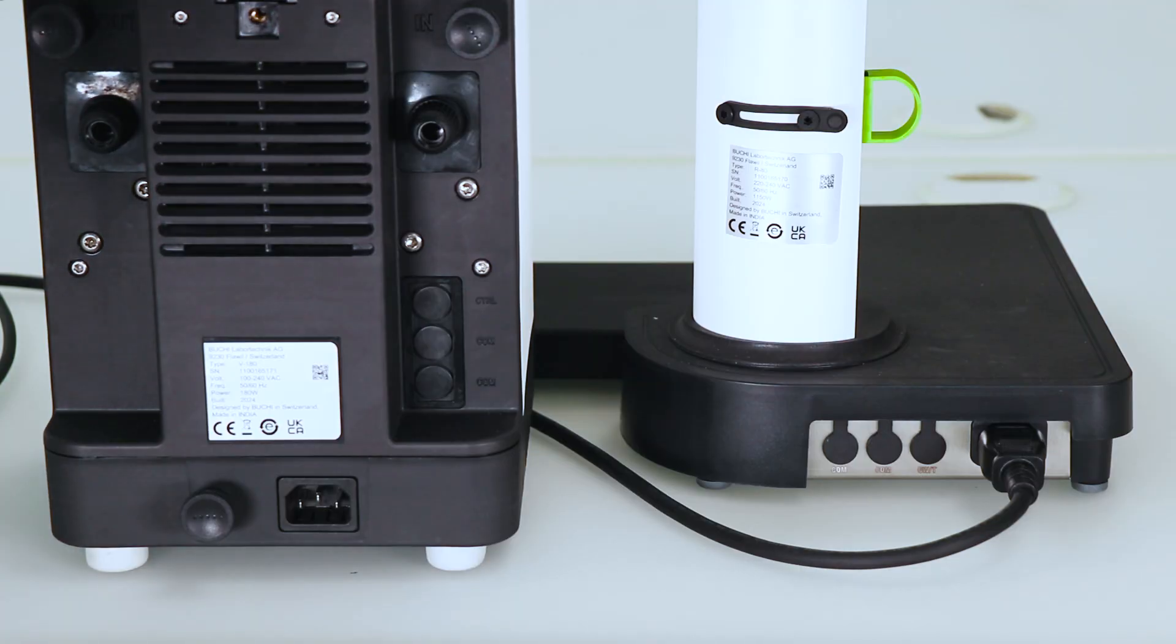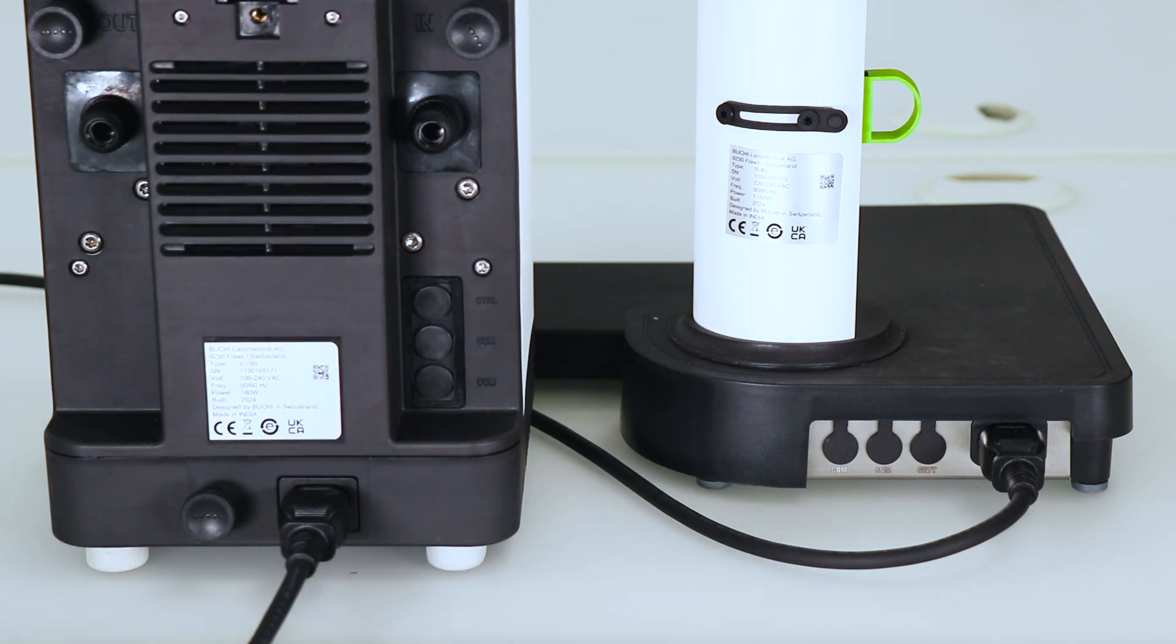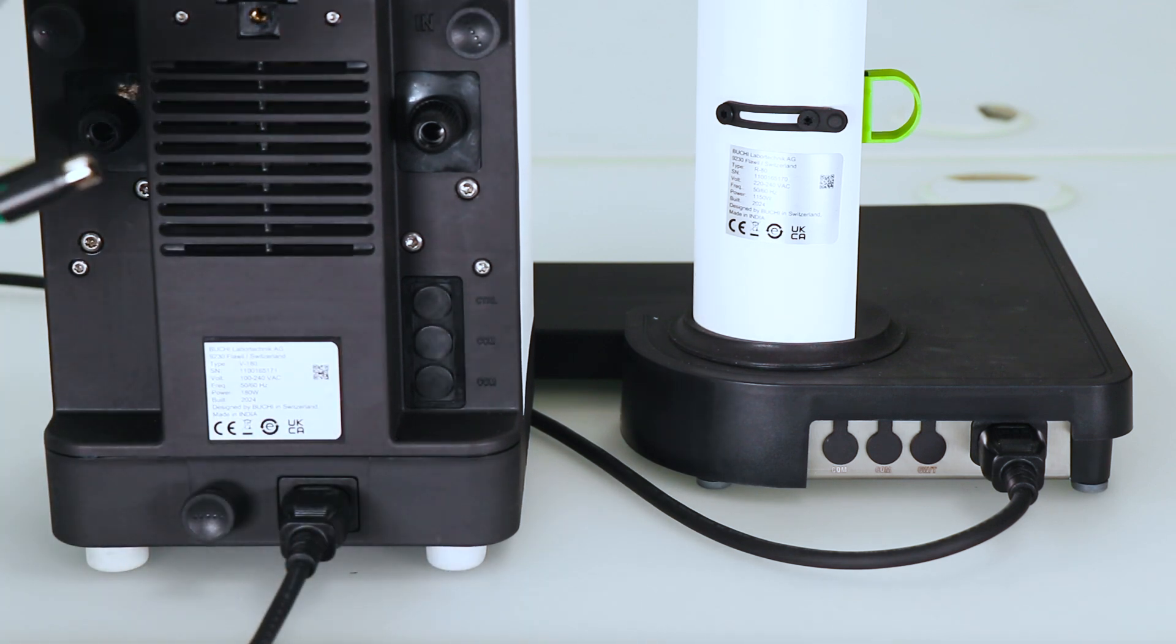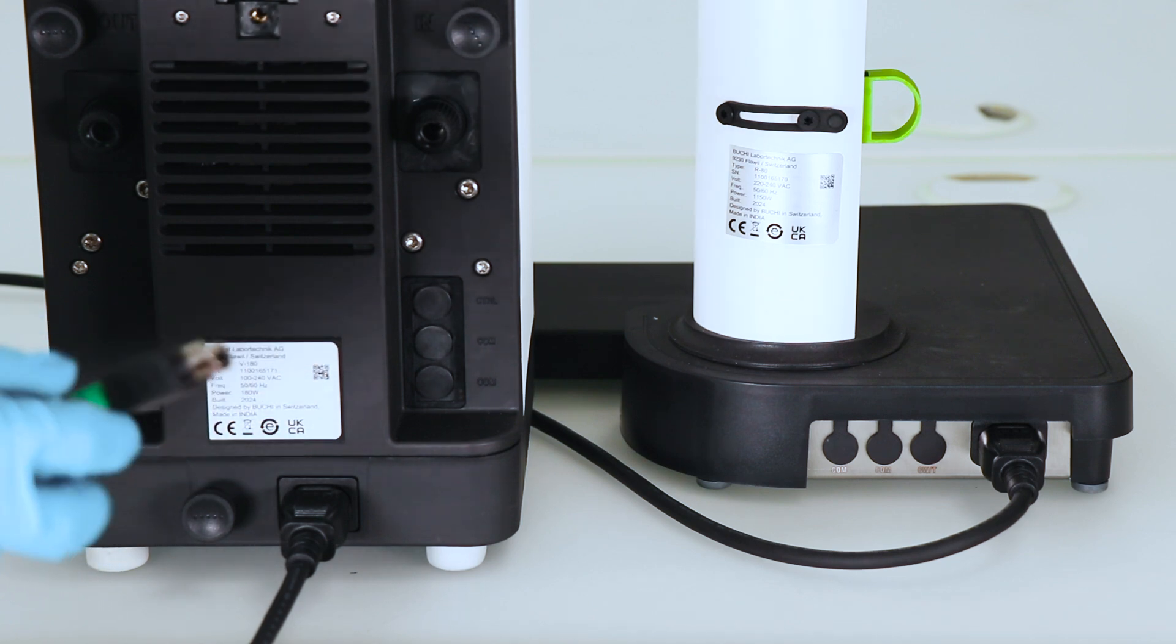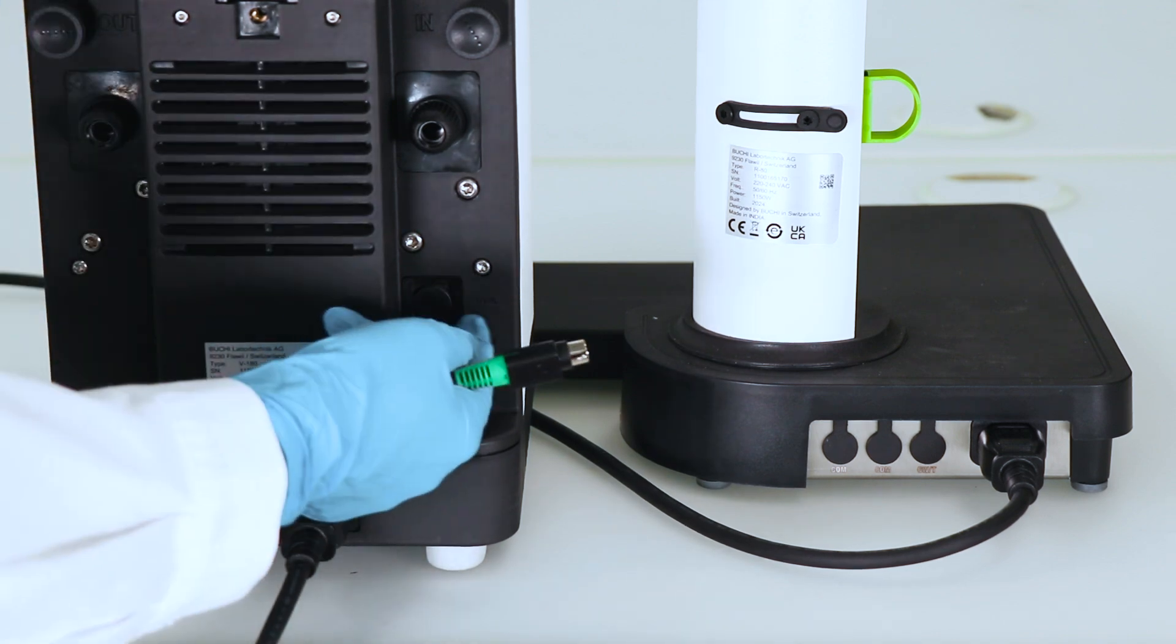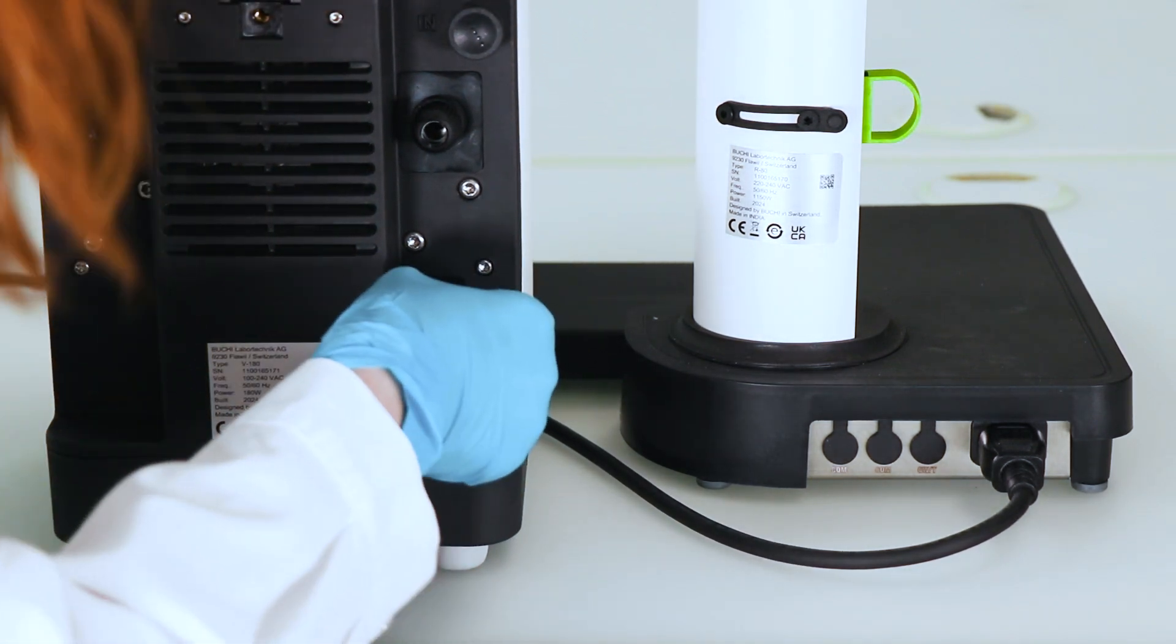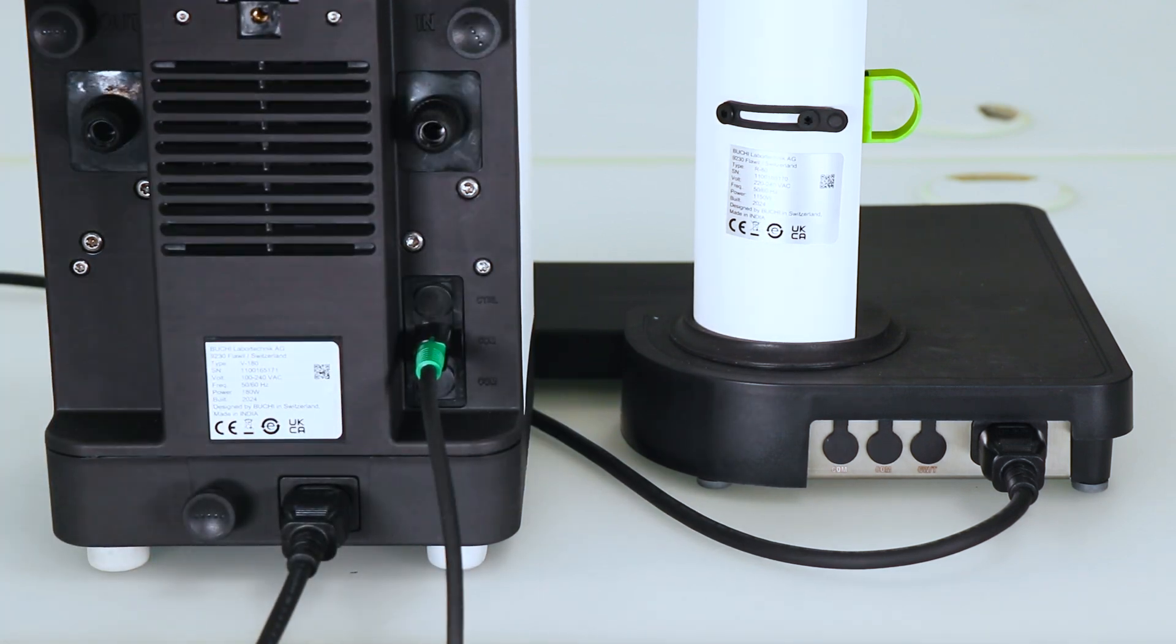So we also connect the pump to the power. And we connect the pump to the R80 with the Buhicom cable. These are the ones with the green parts here. So you go to the outlet that says com here. And do the same on the R80.